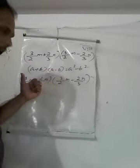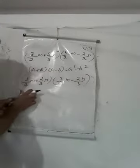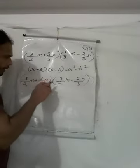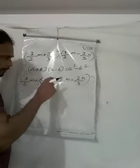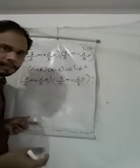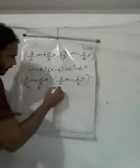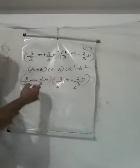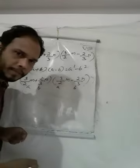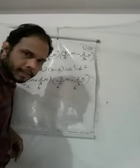What is A and what is B here? So 3/2 M plus 2/3 M, into 3/2 M minus 2/3 A. So this is A and this is B. A plus B into A minus B. What is A plus B into A minus B? A square minus B square.